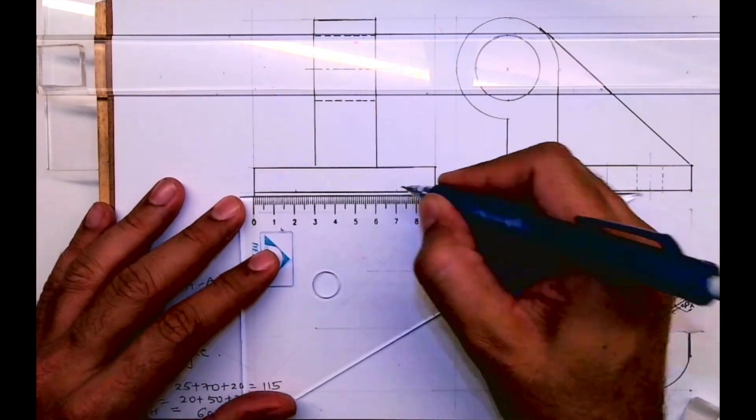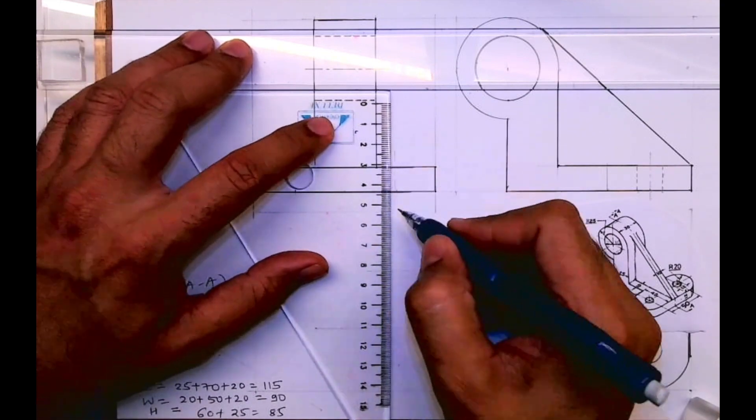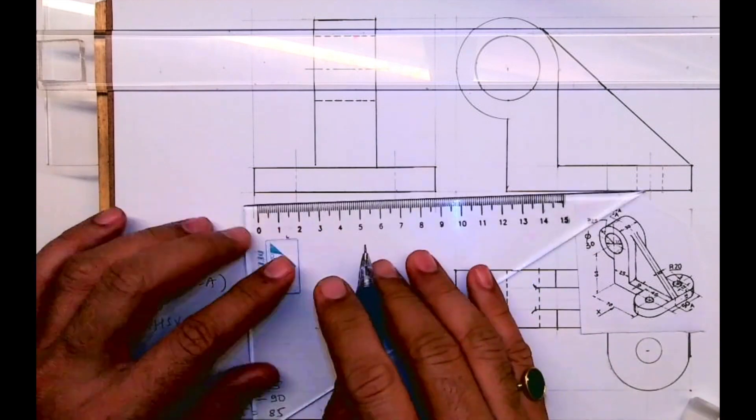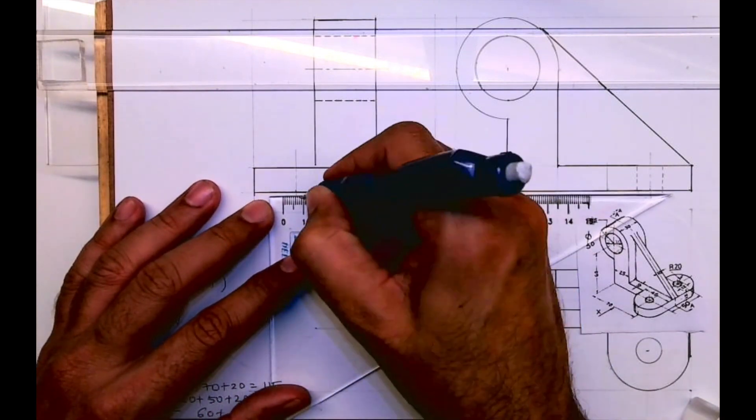We'll mark center line at 20, 20. And we know the radius is 6, so it will be 6, 6 on both the sides. Dotted line will come for the smaller circle, 6, 6 on both the top view.